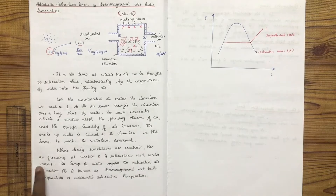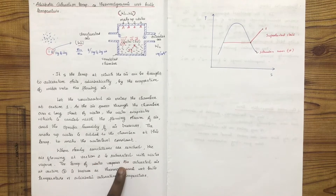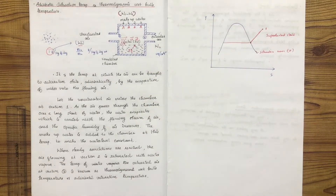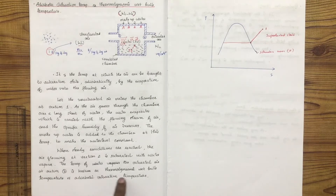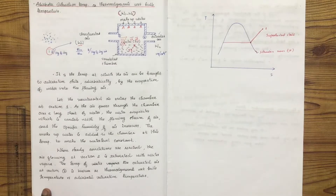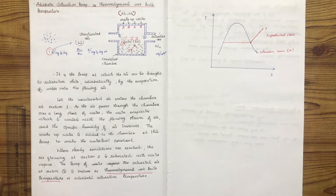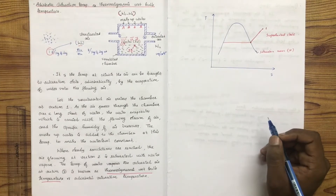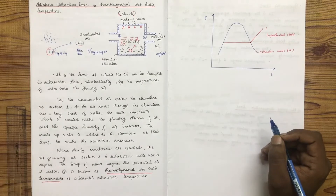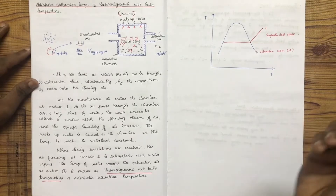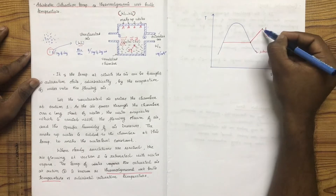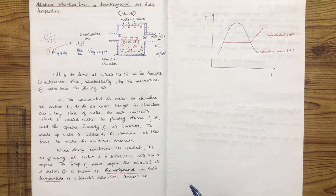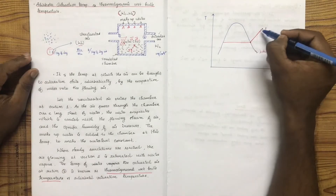When steady conditions are reached, the air flowing at section 2 is saturated. The temperature of this saturated air is known as the thermodynamic wet bulb temperature, also referred to as the dew point temperature. If we obtain the wet bulb temperature, the water vapor is in the superheated state.